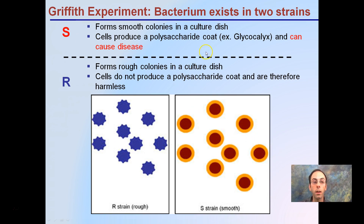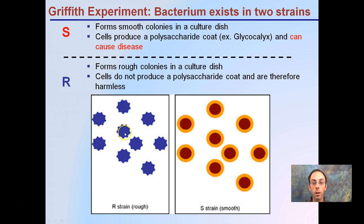The S strain produces a polysaccharide coat — the glycocalyx — which can cause disease. Not all glycocalyxes or polysaccharide coats automatically cause disease, but in this particular bacteria strain it does. The rough colonies don't produce that exterior coat and are therefore considered harmless.